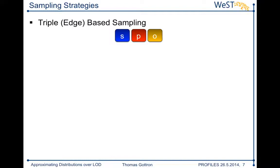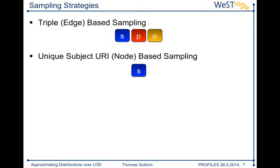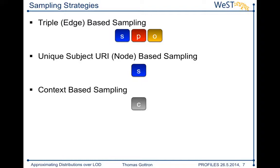The alternative is node-based sampling. In this case we look at the subjects in the triple statements — each subject corresponds to a node in the graph — and we randomly pick a subset of these nodes and attach all their surrounding edges. The last option is sampling based on context, i.e., data sources: you pick a certain ratio of all the data sources publishing data on the linked data cloud, use all the data they provide, and this gives you a sample for estimating distributions.